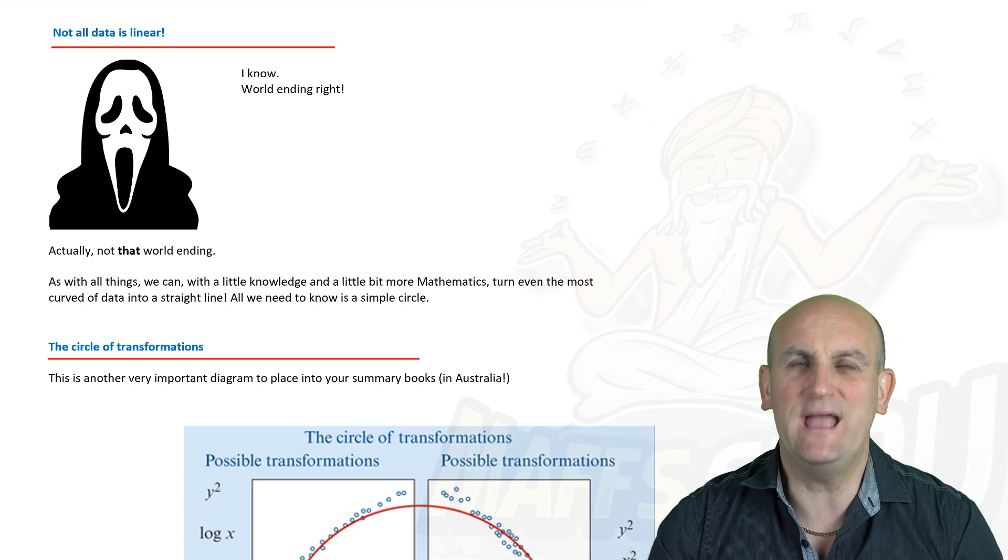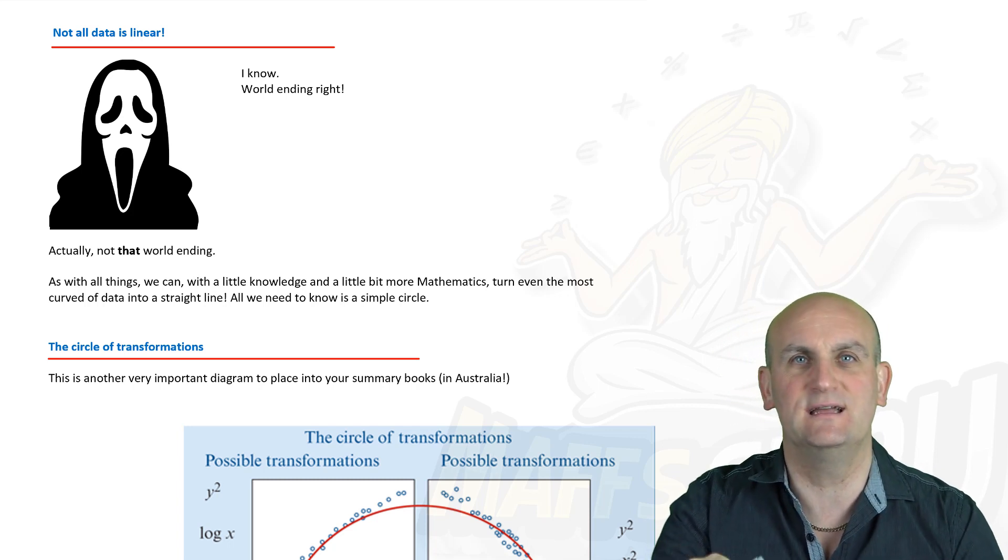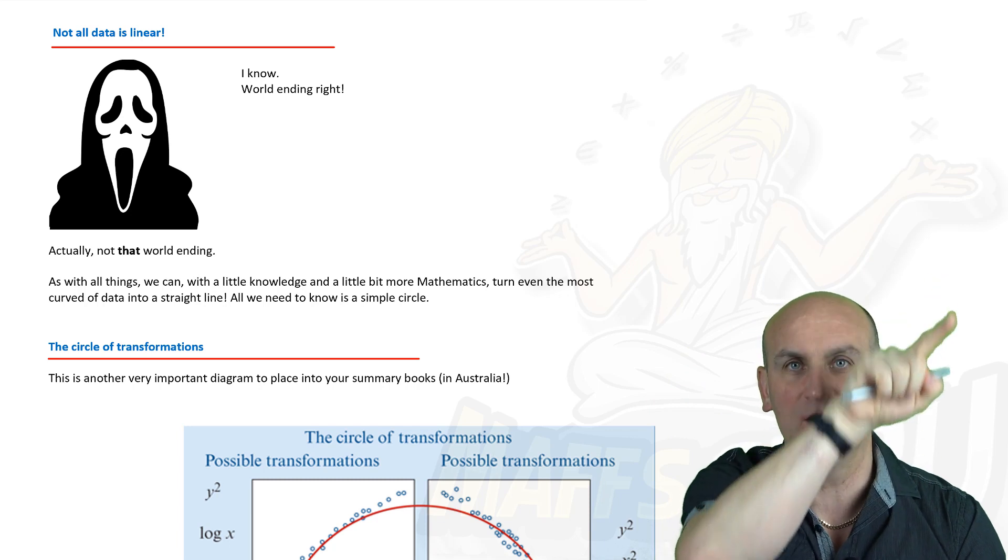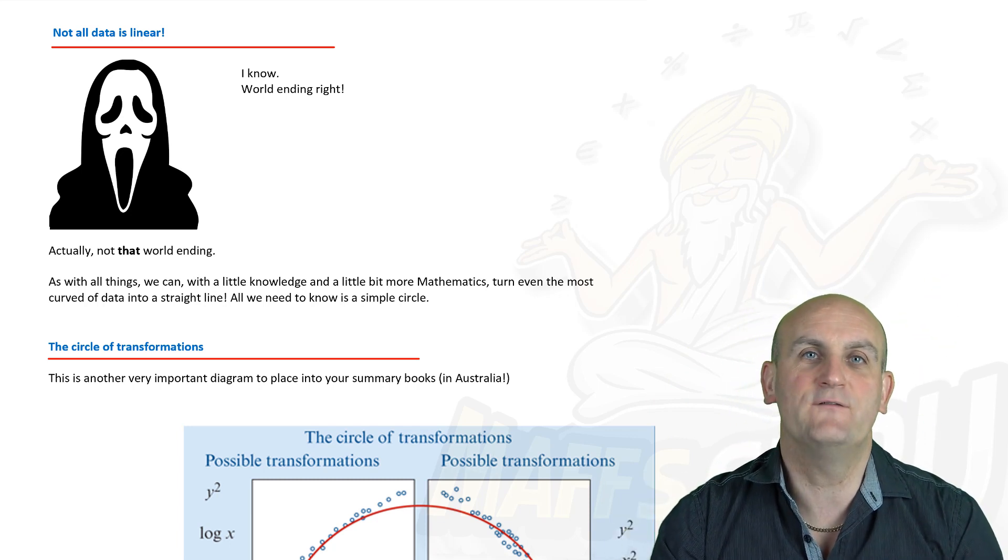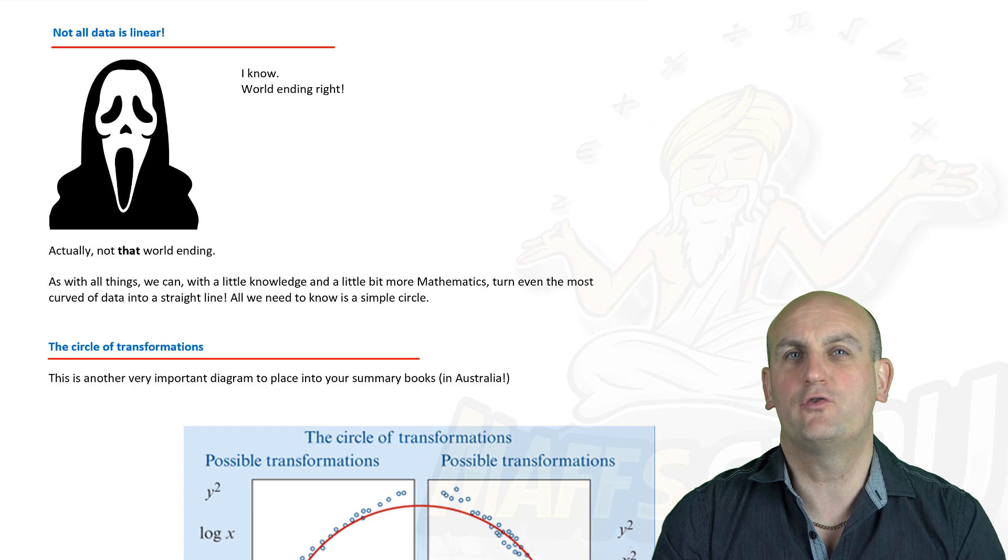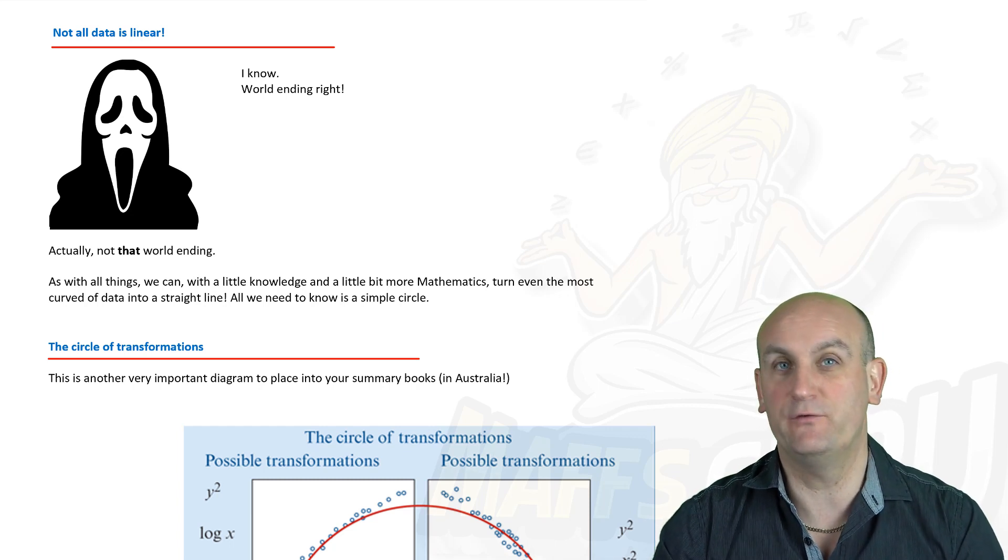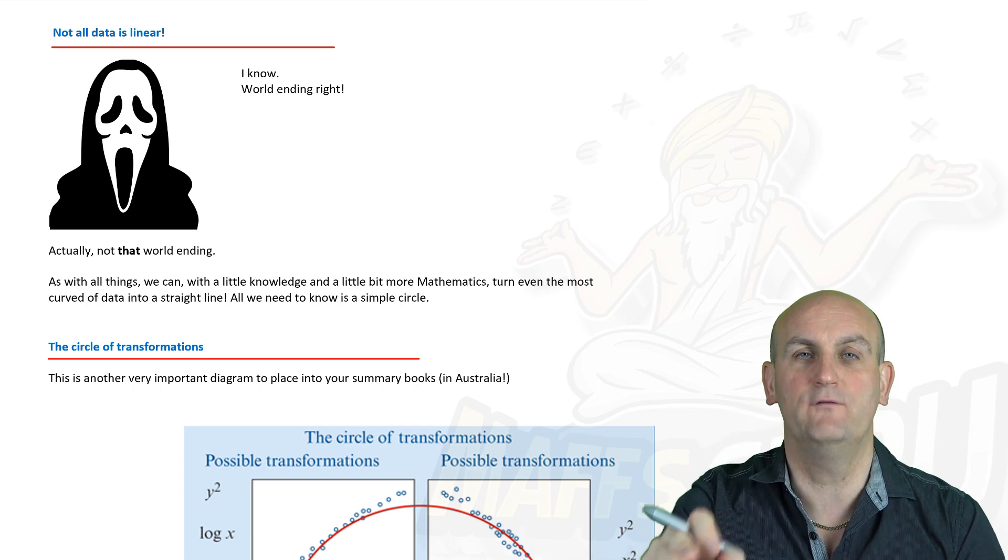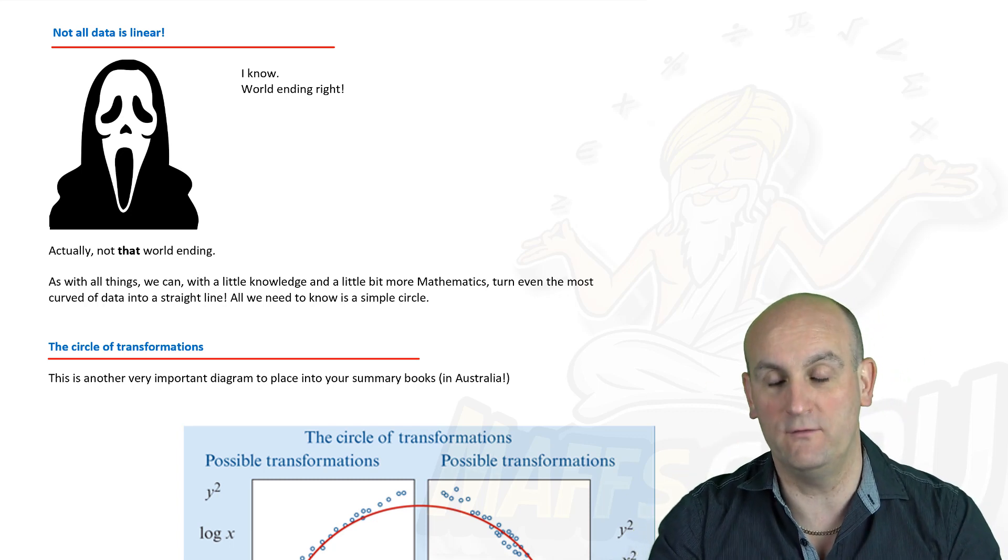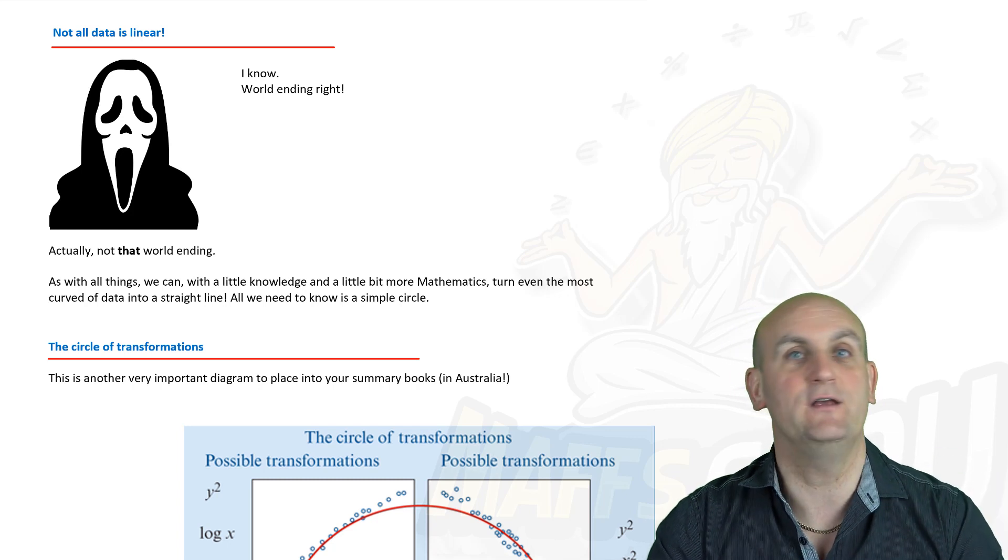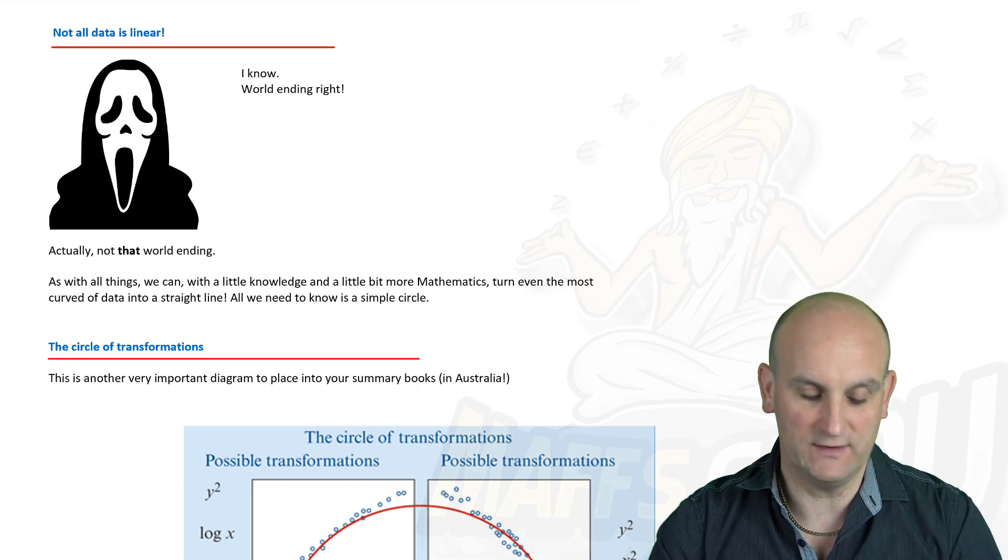But what if we end up with curved data? Data that actually goes like this or like that or like this or like that. Well the good news is we have a method in further maths to try and where possible linearize that data. So if we can actually turn a curve into a straight line through whatever method we'll talk about in a moment then we can go on and do our regression analysis and write reports and do all sorts of exciting stuff.